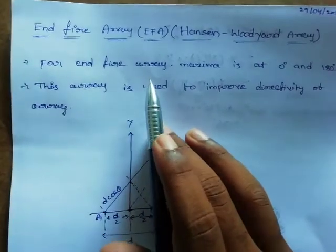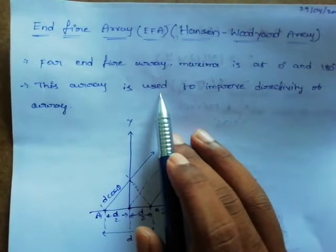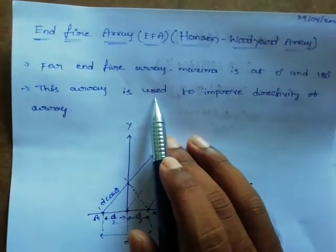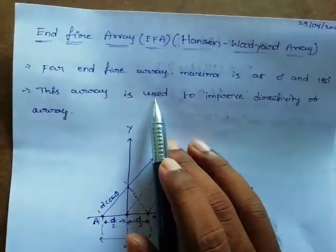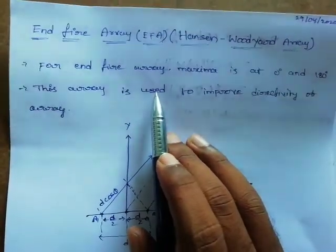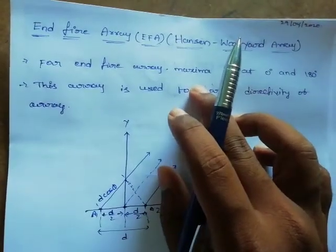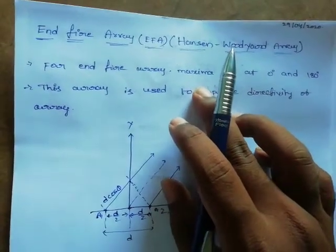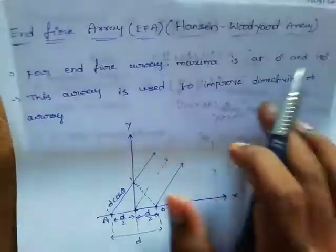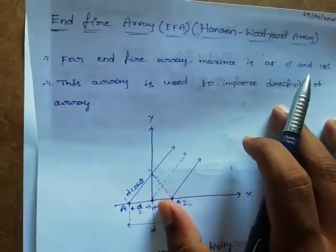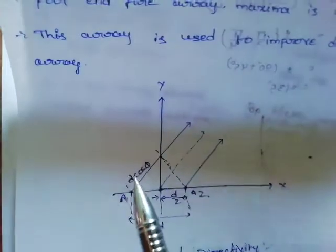Why do we need end fire array instead of broadside array? This array is used to improve the directivity of the array. Hanson and Woodyard proposed this type of array specifically to increase directivity — that is the major and important point to remember here.